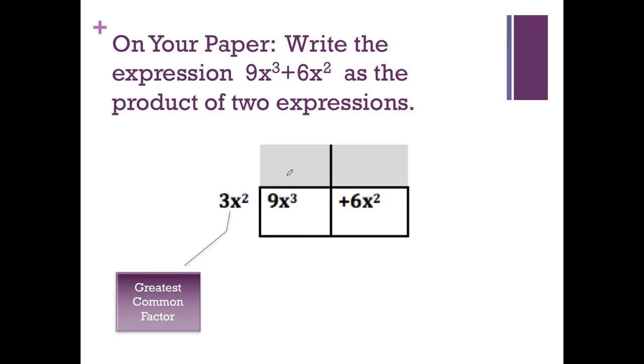All right, so now we're going to use this box to work on the greatest common factor. So make sure you write the expression 9x cubed plus 6x squared as the product of two expressions. So here's the greatest common factor, and then the gray boxes is going to be this times what is going to be 9x cubed. So for example, I know that if I multiply 3x squared times 9x cubed, well I know that's going to be 3x. Isn't that cool?